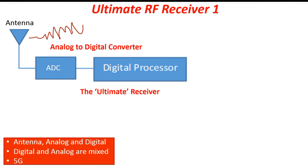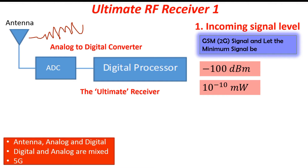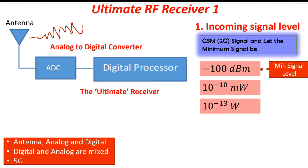The first thing we'd like to discuss is the incoming signal level — what is the signal level that the antenna will receive? It depends on how far away a user is from the broadcasting system and what standard they are using. Considering the GSM standard, a 2G standard created in the early 90s, the signal level we can expect to receive is in the order of negative 100 dBm, which equals 10 to the negative 13 watts — less than a picowatt.